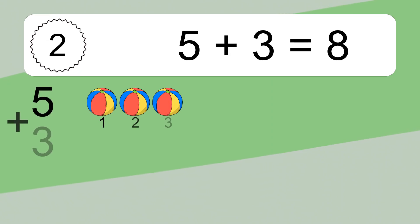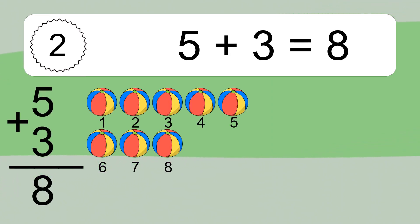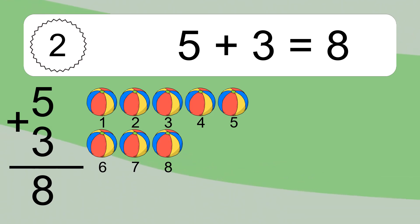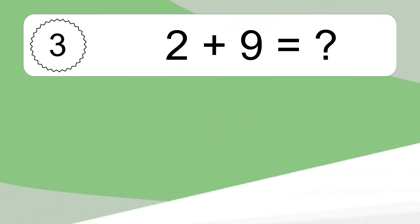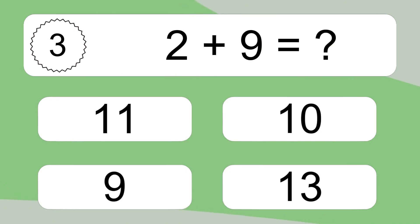5 plus 3 equals what? 5 plus 3 equals 8. Let's count it: 1, 2, 3, 4, 5, 6, 7, 8.